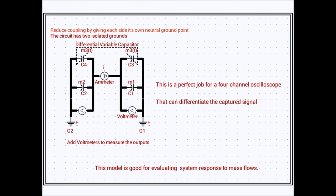We have introduced the component, the neutral ground circuit, and so we have it here and we will use it to reduce the coupling. Where we had the circuit connected to a single ground, we now give each block its own independent neutral ground. So we have G1 being the neutral ground for the first mass and G2 being the neutral ground for the second mass analog.